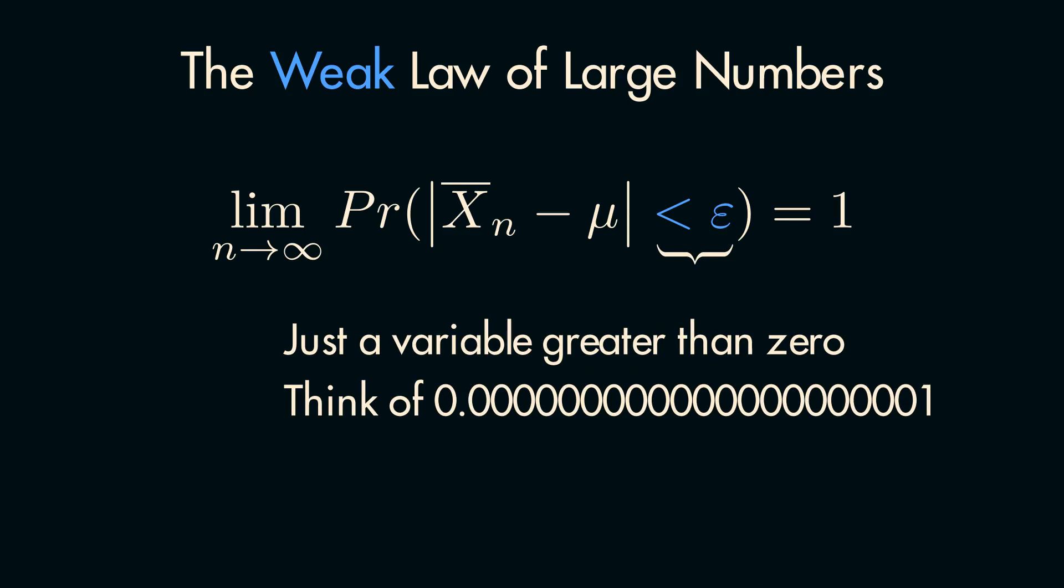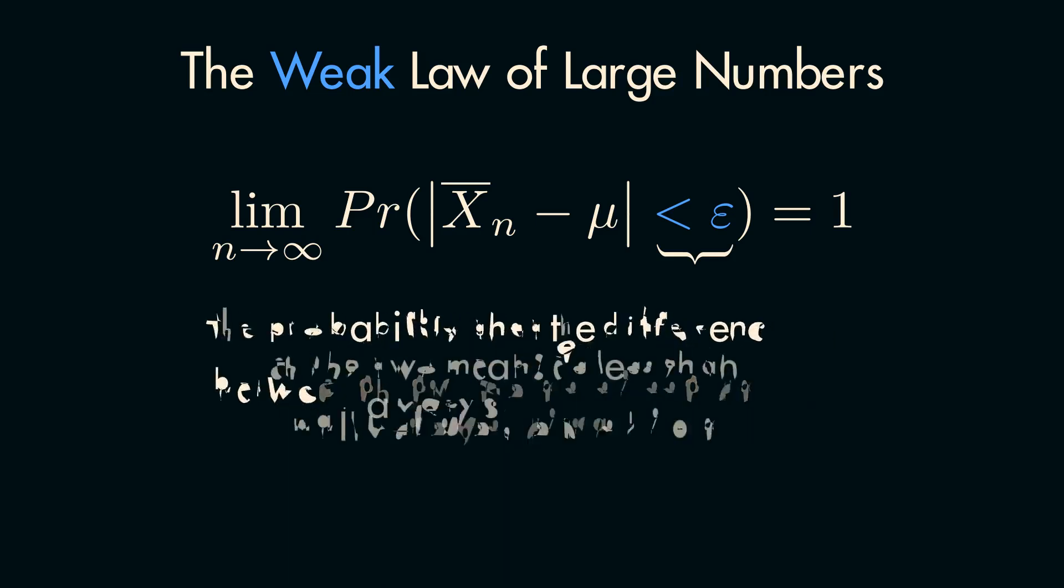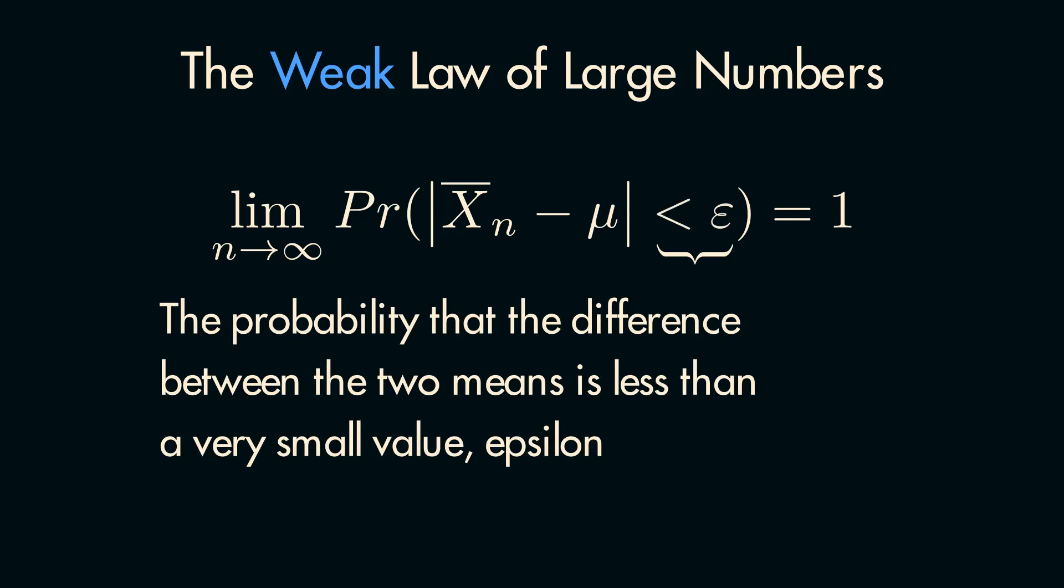Typically when you see it, you can imagine it as an infinitesimally small value like 1 with 20 zeros in front, but smaller. To bring that all together, this notation refers to the probability that the difference between the sample mean and the population mean is less than an infinitesimally small value epsilon. In layman's terms, this basically means the probability that the sample mean and the population mean are within some small margin of each other.